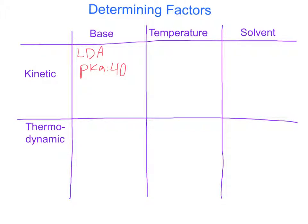Another benefit of LDA is that it's a rather large base, looking like this. What this allows is a decrease in the likelihood that it will remove the more substituted proton. To achieve the thermodynamic enolate, we still need a strong base. However, we tend to pick a smaller base, such as sodium ethoxide, which still has a relatively high pKa.